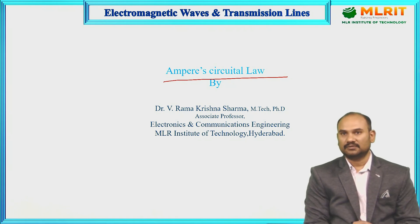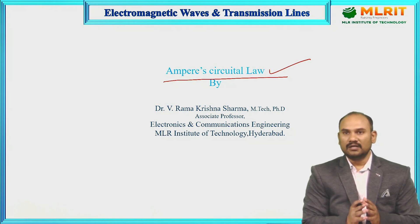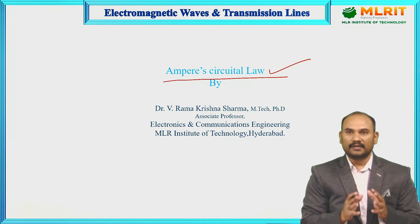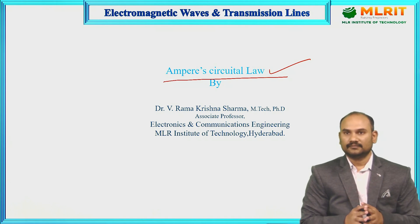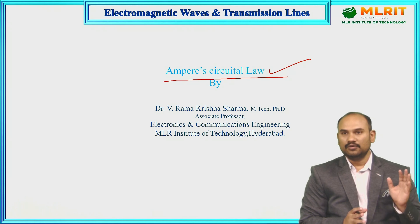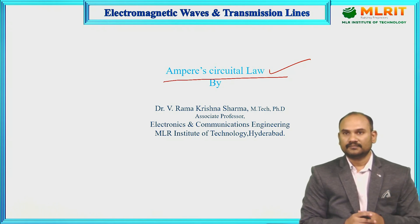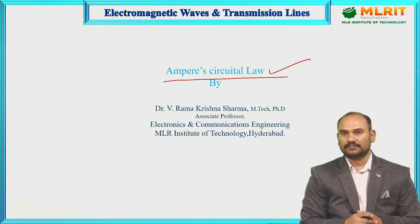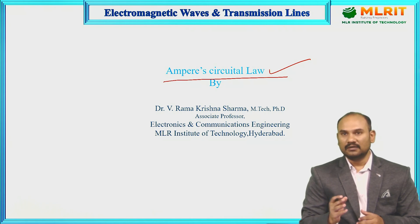Ampere's Force Law, as the name suggests, deals with the magnetic forces between electric conductors — like Coulomb's law, which deals with electric forces between electric charges. In Unit 1, which is electrostatics, we have Coulomb's law. In Unit 2, which is magnetostatics, we have Ampere's Force Law. Coulomb's law deals with electric force; Ampere's Force Law deals with magnetic force between two electric conductors.